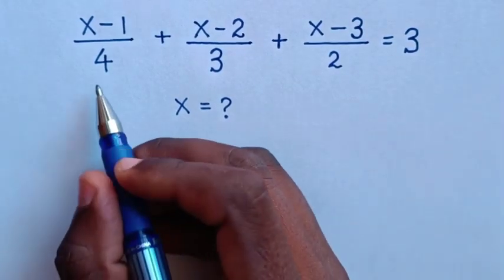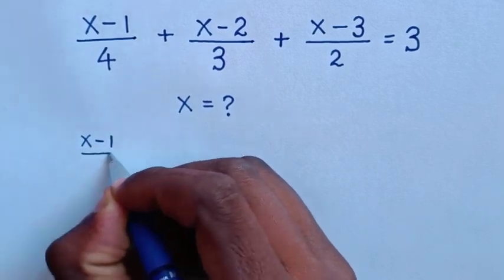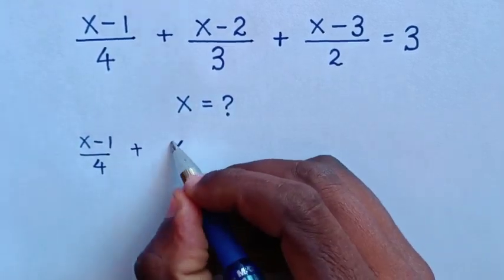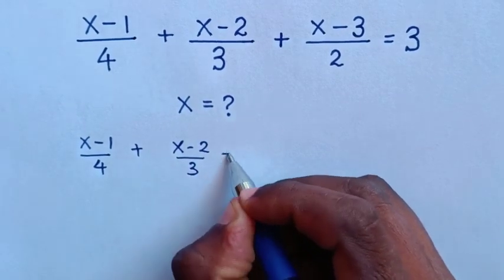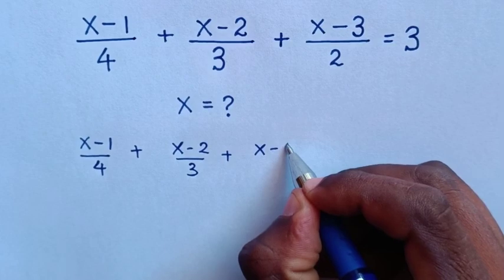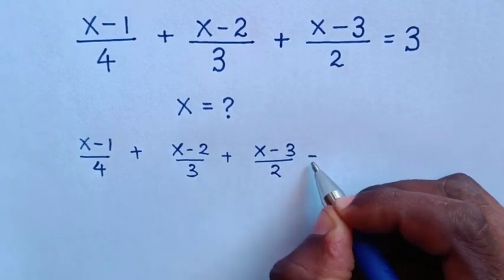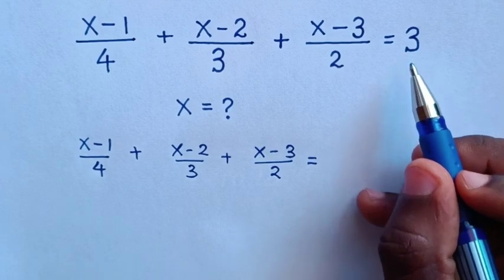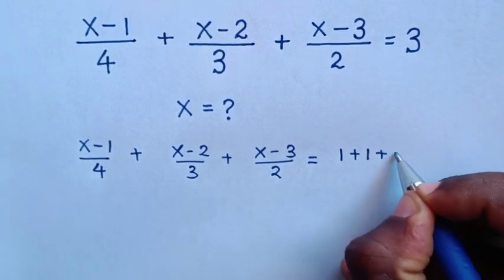So our equation would be x minus 1 over 4, plus x minus 2 over 3, plus x minus 3 over 2, and this is equal to 3. Here, 3 is the same as 1 plus 1 plus 1.